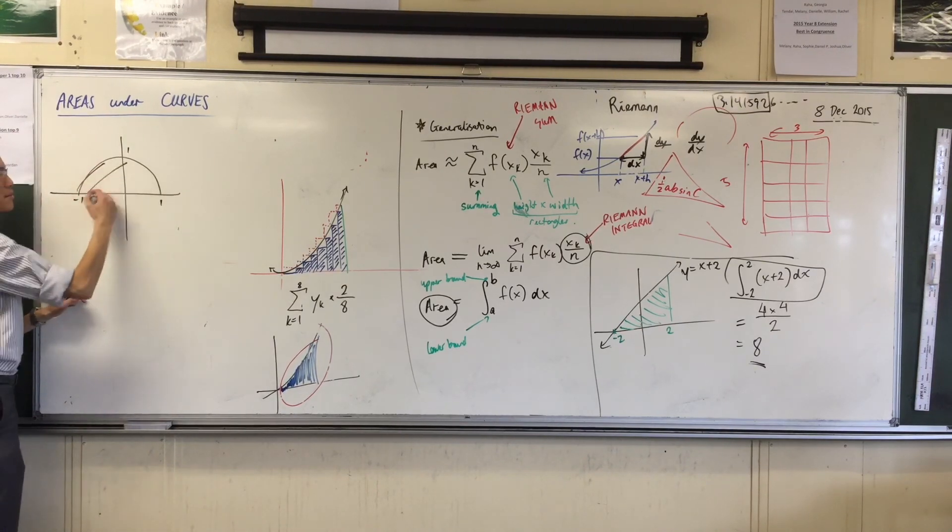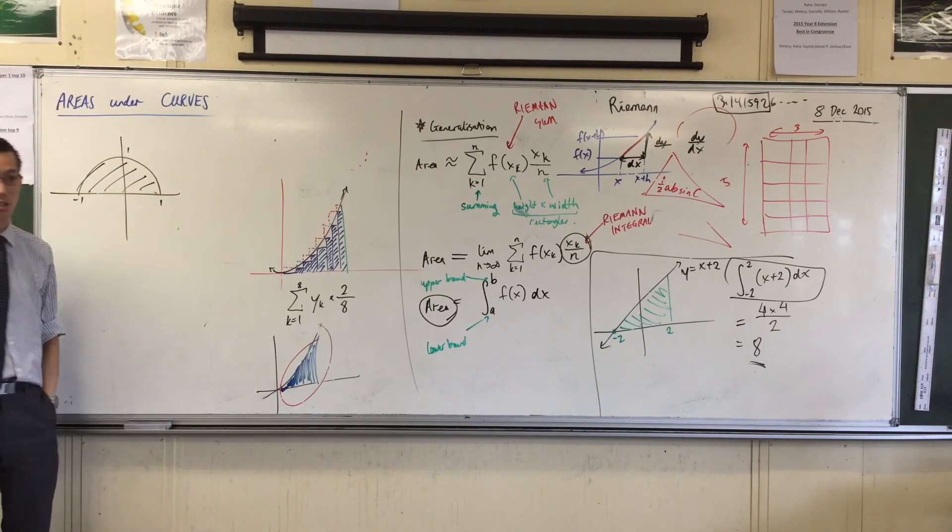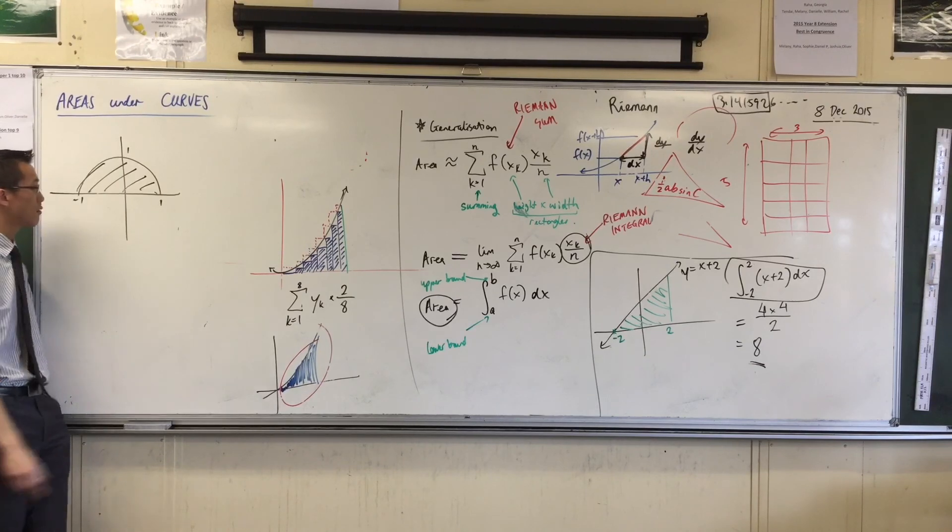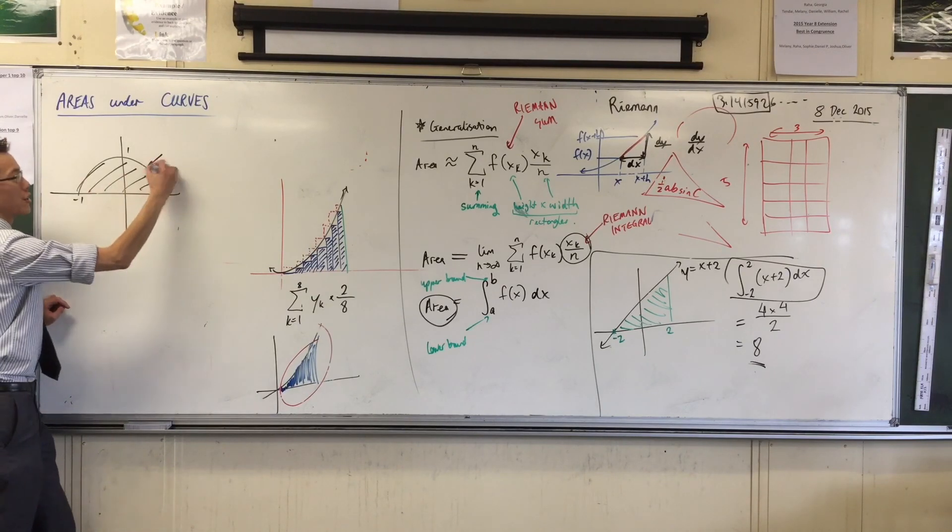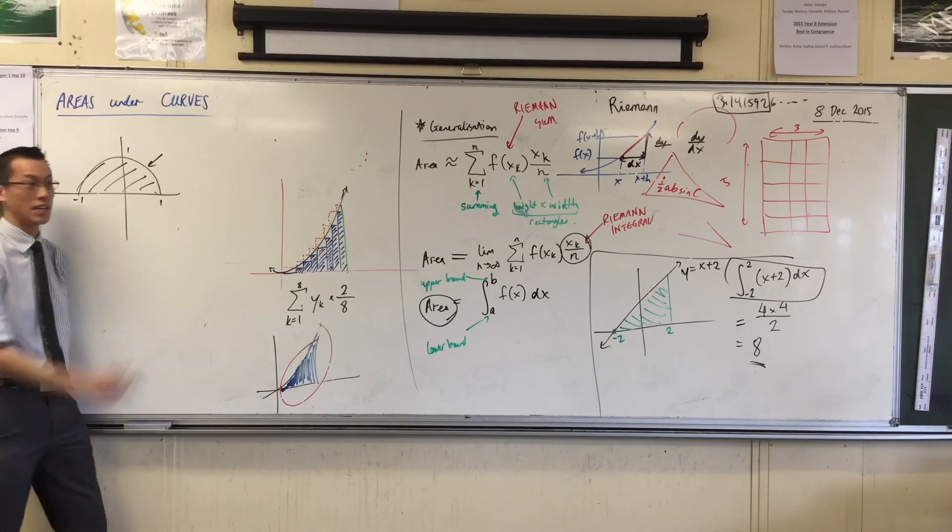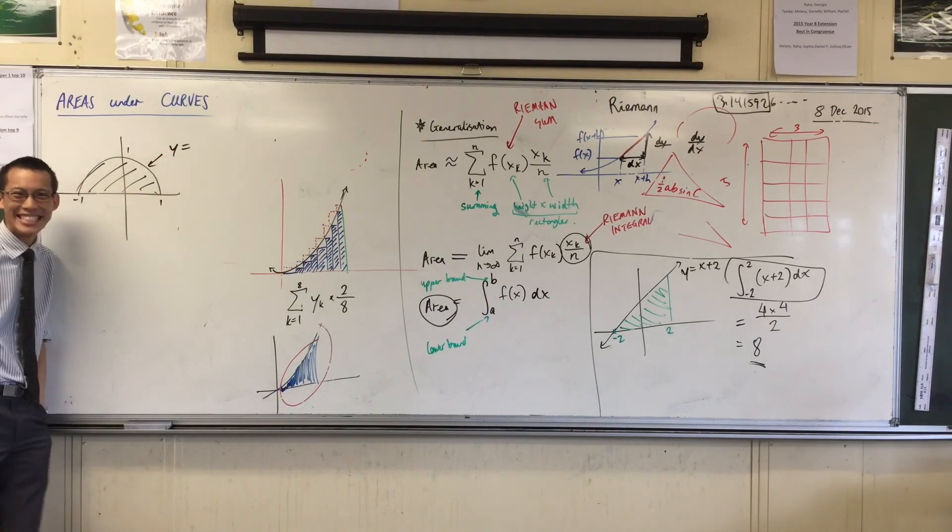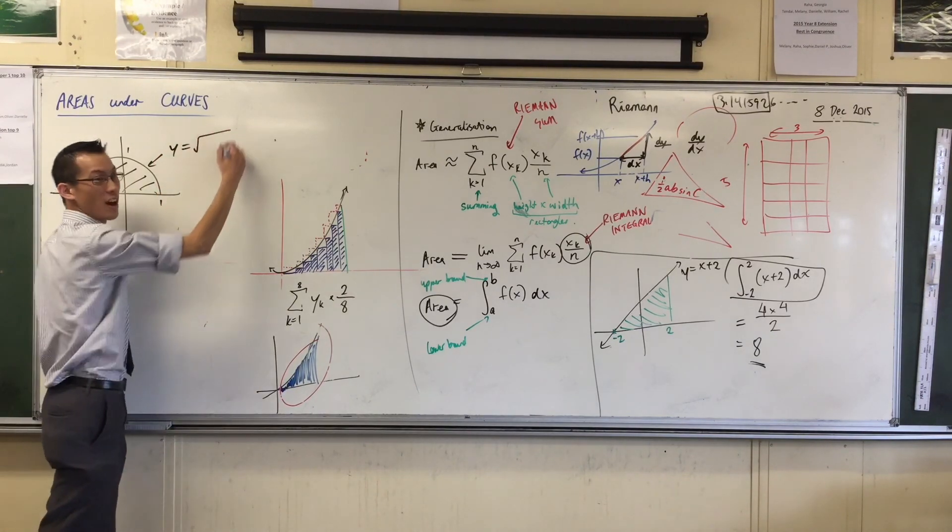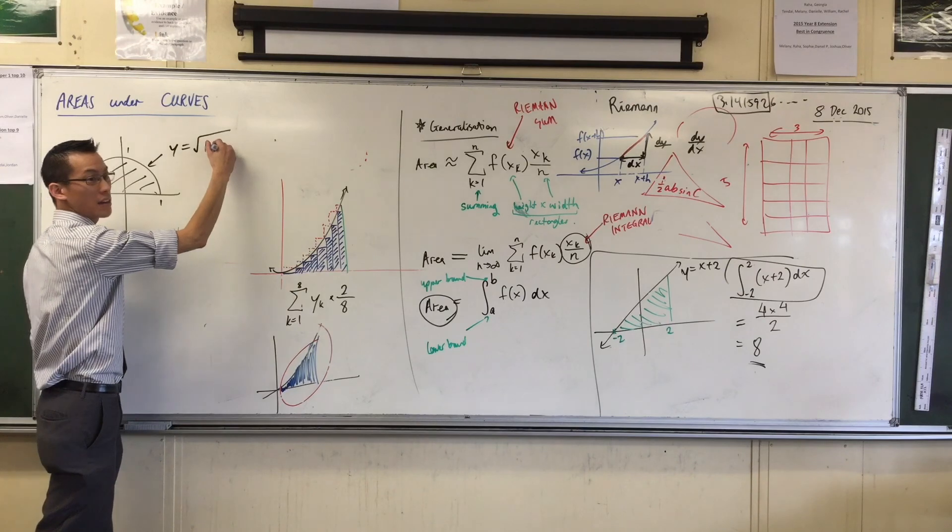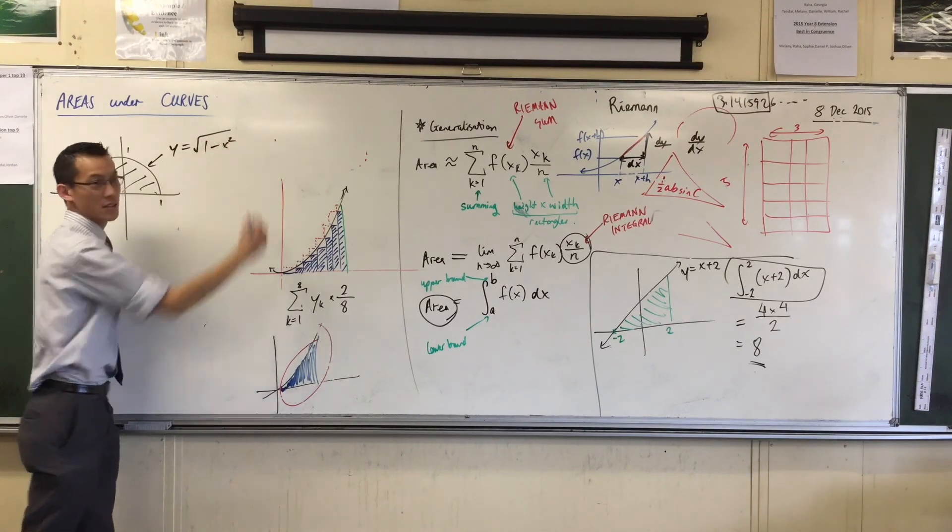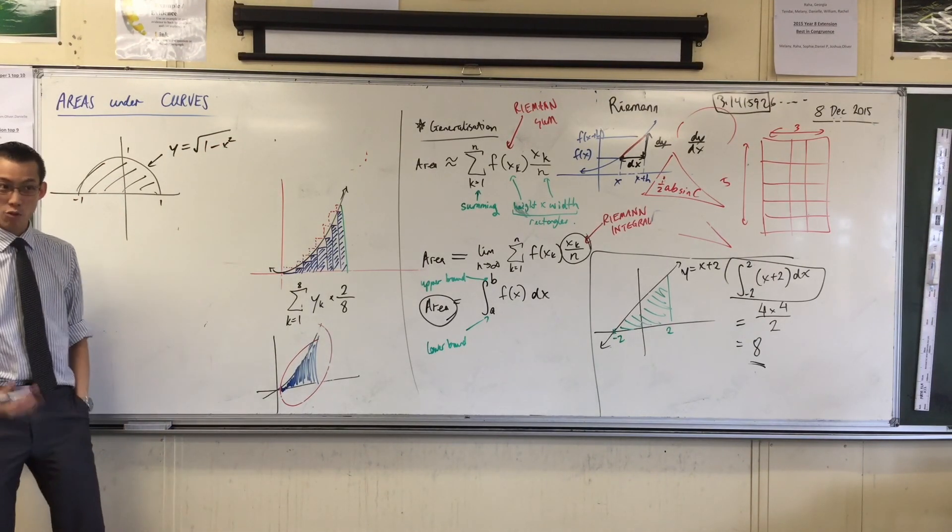If I have a semicircle, that's half of the unit circle, half of the unit circle. What's the equation of this semicircle? I'll give you a hint, it starts with y equals. Square root of, square root of 1 minus square. Where did I get that from?